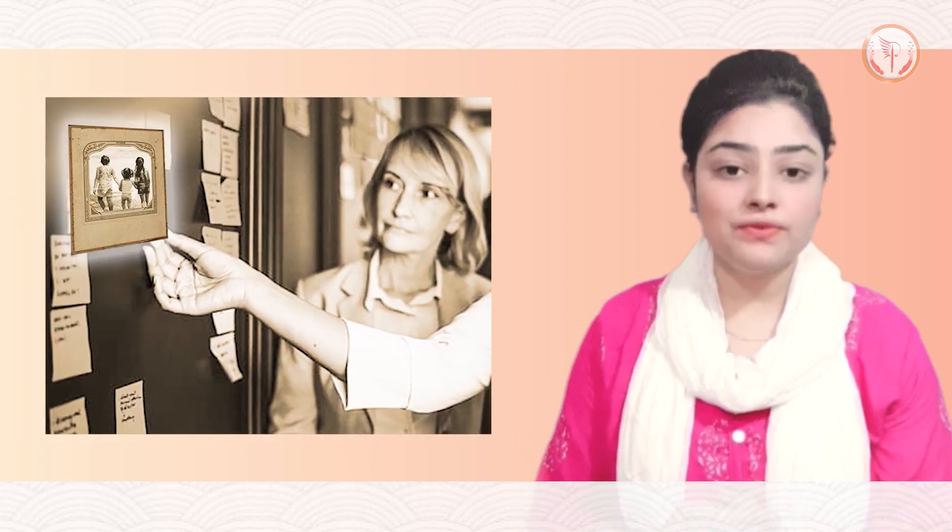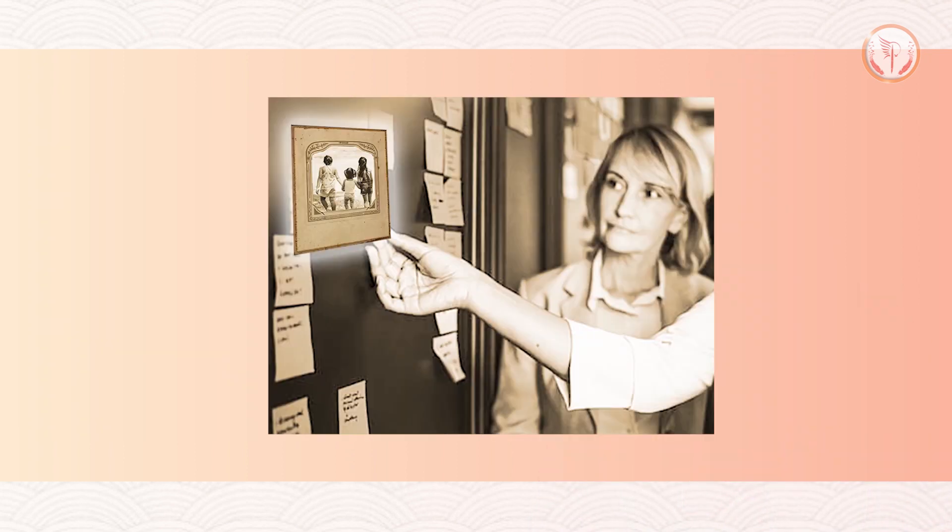The second stanza talks of a time 20–30 years later. The poet's mother is now an adult, approximately 40–50 years old, and she is laughing seeing that photograph and commenting on the way they were dressed for the beach. At the same time, she recollects her past and feels sad about her childhood days, which will never come back to her.